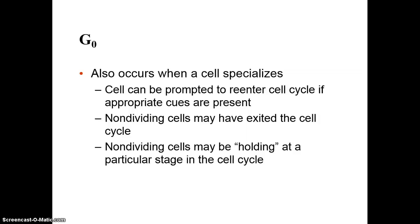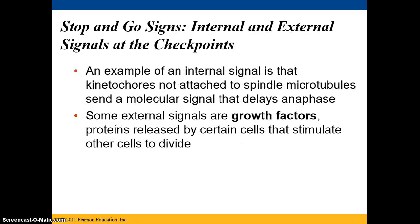G0 occurs not only when a cell is told not to divide at the G1 checkpoint, but also when a cell specializes. If a cell has a particular job or is differentiated, it will remain in G0. A cell can be prompted to re-enter the cycle if appropriate cues are present — for example, if tissue is damaged and the cell needs to divide for repair. There are also checkpoints that actively tell the cell to stop, not just go.